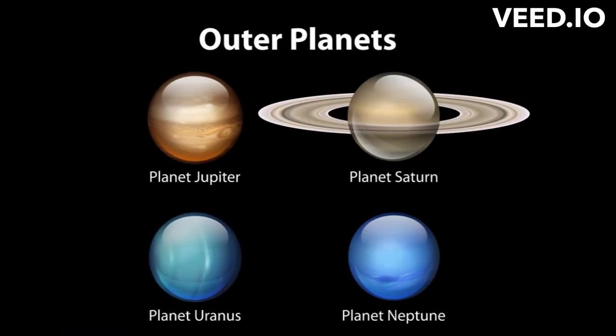The outer planets, on the other hand, are also known as the gas giants. These include Jupiter, Saturn, Uranus, and Neptune. The outer planets are much farther away from the Sun and are massive in size. They are mainly composed of gas and ice and do not have a solid surface.